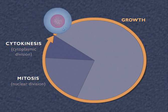Throughout interphase, the cell is engaged in growth and metabolic activities. Interphase can be further broken down into three discrete phases called G1, S, and G2.